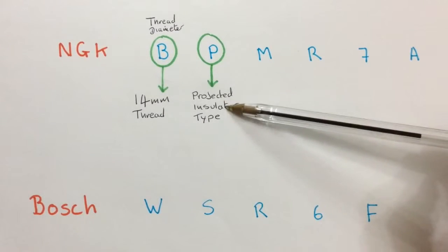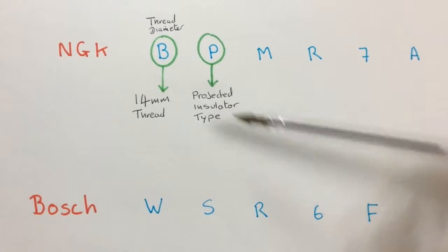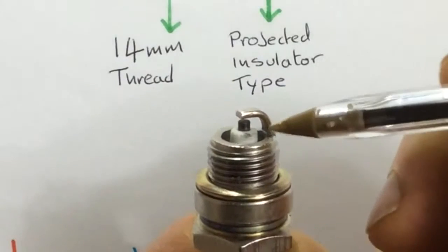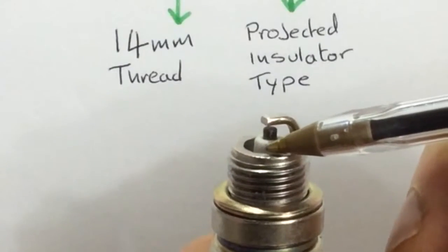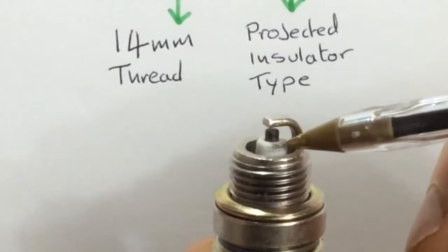And P means projected insulator type. And what that means is, if we take a look at the end of the plug here, you can see a white part there. That's the insulator.